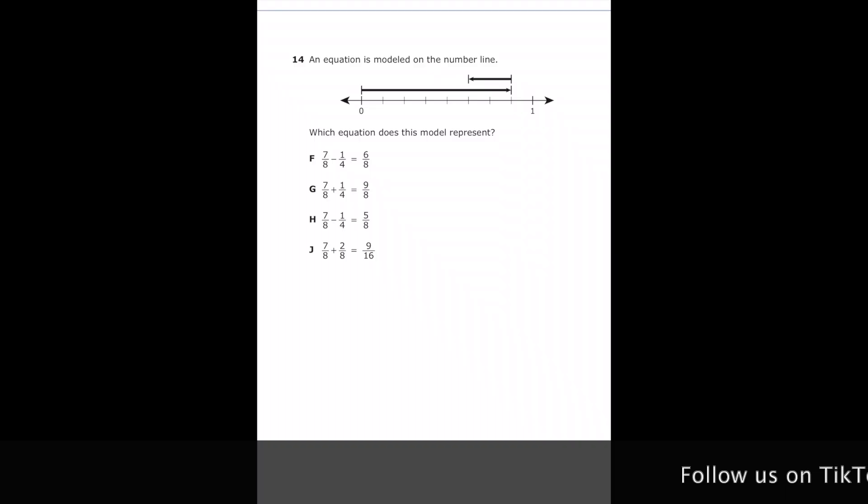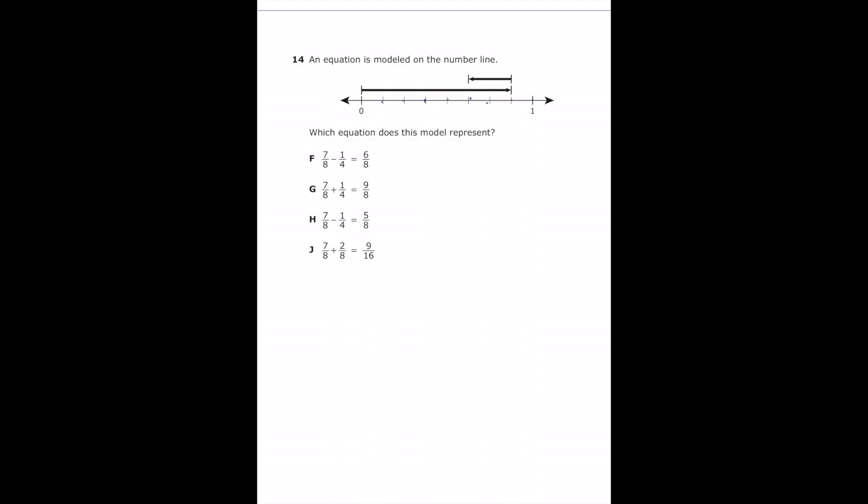Number 14, an equation is modeled on the number line. Which equation does this model represent? So let's figure out what these lines are counting by first. So we have 1, 2, 3, 4, 5, 6, 7, and then 8 to get to 1. So our denominator should be 8 in most of these. So this is basically 1 eighth, 2 eighths, 3 eighths, 4 eighths, and so on.